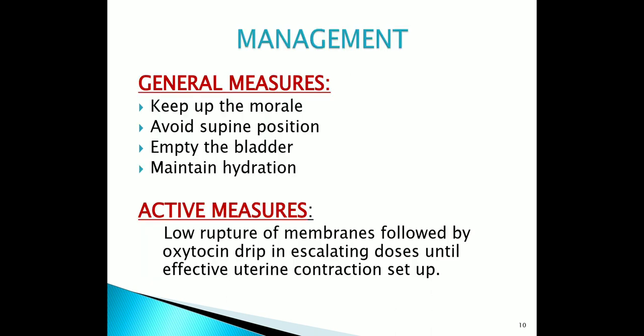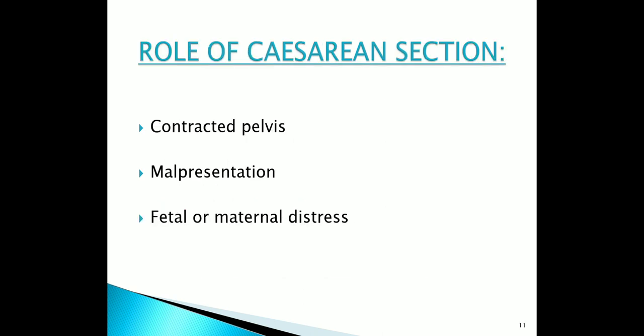How will you manage uterine inertia? General measures: keep the morale of the patient high, as maternal stress and emotional factors appear to inhibit uterine contraction through endogenous pathways. Avoid supine position, empty the bladder, and maintain hydration. Active measures include low rupture of membranes followed by oxytocin drip in escalating dose until effective uterine contraction is set up. Caesarean section is done in uterine inertia when it is associated with contracted pelvis, malpresentation, or fetal or maternal distress.